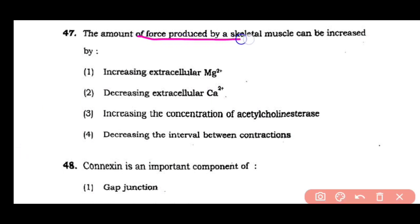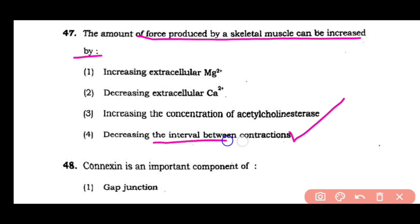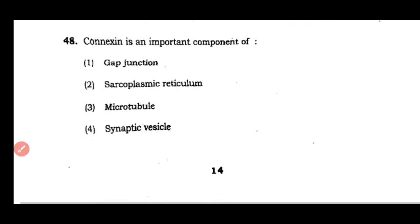Question number 47: The amount of force produced by a skeletal muscle can be increased by increasing extracellular Mg²⁺ ions, decreasing extracellular calcium ions, increasing the concentration of acetylcholinesterase enzyme, or decreasing the interval between contractions. The correct answer is option 4 — decreasing the interval between contractions and producing repeated contractions increases the force of skeletal muscle.